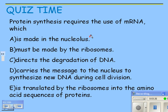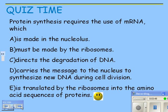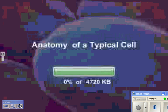Protein synthesis requires the use of messenger RNA. The mRNA is made in the nucleolus — no, that's ribosomal RNA. Must be made by the ribosomes — no. Directs the degradation of DNA — no. Protein synthesis means making proteins. It requires the use of mRNA, and the mRNA is translated by the ribosomes into amino acid sequences of proteins. We'll cover that in another unit.